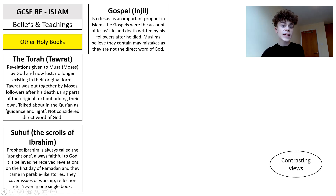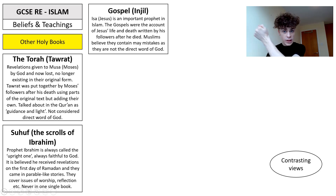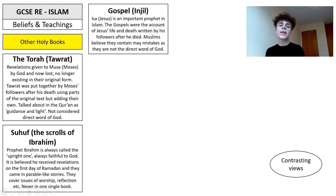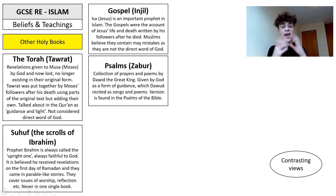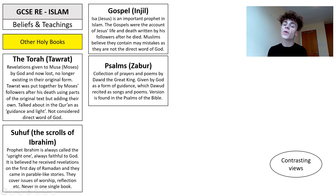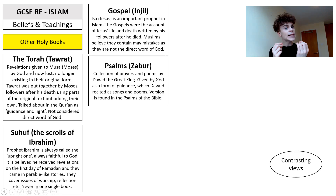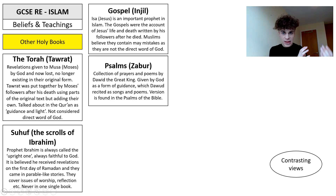We then have the Gospels, where we read about Isa — also known as Jesus — who is seen as an important prophet in Islam. The Gospels were the account of Jesus' life and death written by his followers after he died. Muslims do not believe Jesus is the Son of God, but he is an important prophet. Muslims believe the Gospels contain many mistakes, as they again are not the direct word of God — that is only the Quran, revealed to Muhammad via Angel Jibril. Then we have the Psalms — a collection of prayers and poems by Dawood, given by God as guidance, which he recited as songs and poems. Muslims believe a version of this is found in the Bible but the original version has been lost and changed.